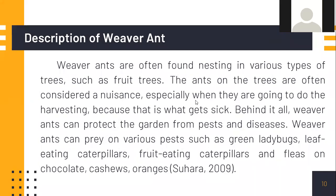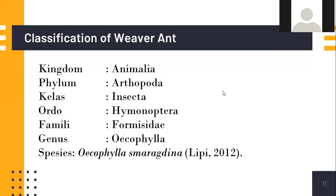Weaver ants are often found nesting in various types of trees, such as fruit trees. They are often considered a nuisance, especially during harvesting. However, weaver ants can protect gardens from pests and disease. They can prey on various pests such as green stink bugs, leaf-eating caterpillars, fruit-eating caterpillars, and pests on cocoa, cashew, and orange plants. Classification: Kingdom Animalia, Phylum Arthropoda, Class Insecta, Order Hymenoptera, Family Formicidae.